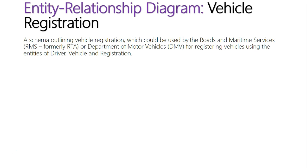We're going to look at this for the RMS database we've been looking at throughout these previous videos. This could be a database for the RMS — Road and Maritime Services — or the DMV as it's referred to in other countries, the Department of Motor Vehicles — specifically for different license holders registering their separate vehicles so that they are registered with the governing body.